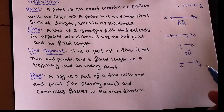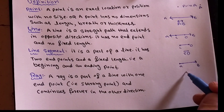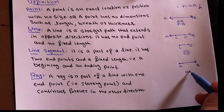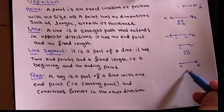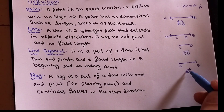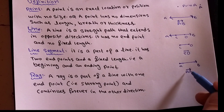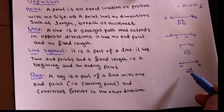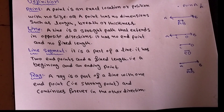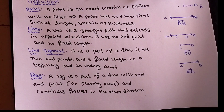For example, AB is a ray. We write it as AB with an arrow pointing in one direction on top. On one side there is an arrow indicating it extends infinitely forward, and the other side has the starting point. That is how a ray is represented.